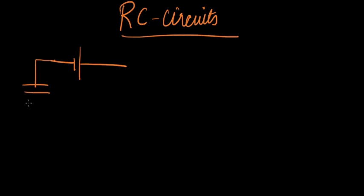All right, so this is how a basic RC circuit looks like and we have a battery with the EMF E, a resistor with resistance R, and a capacitor with capacitance C.